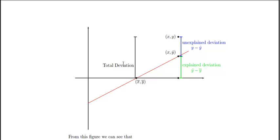One of the components is the explained deviation. The explained deviation is the distance the model is from the average of the data set, and is represented here in green.